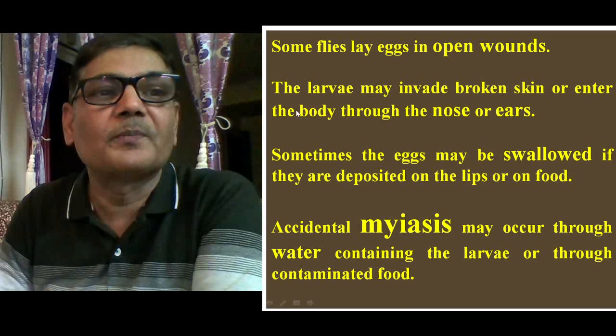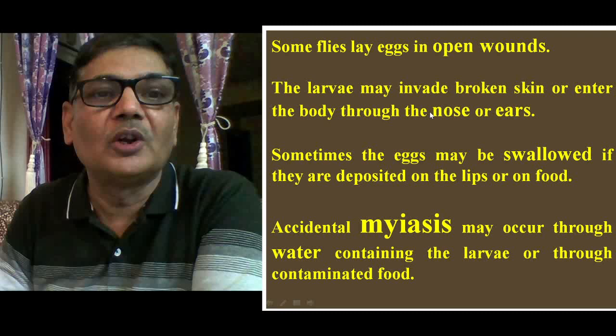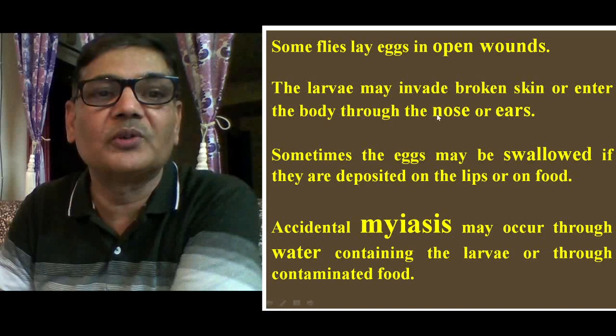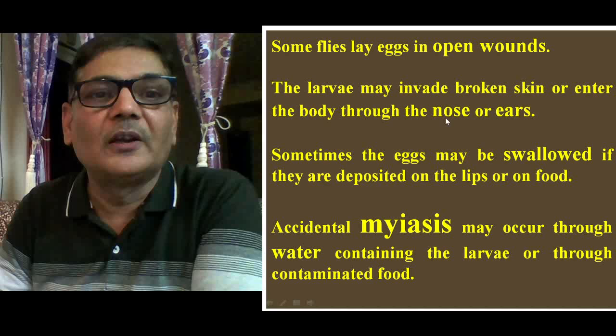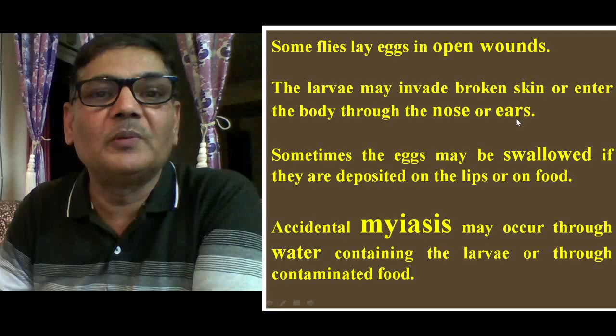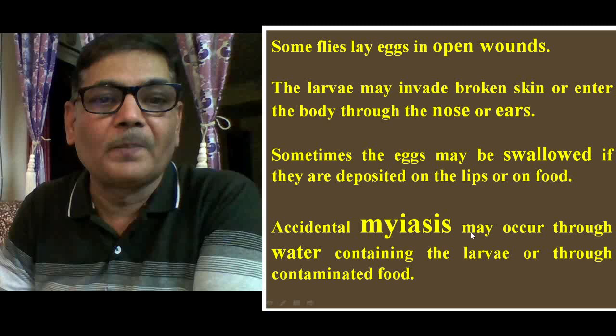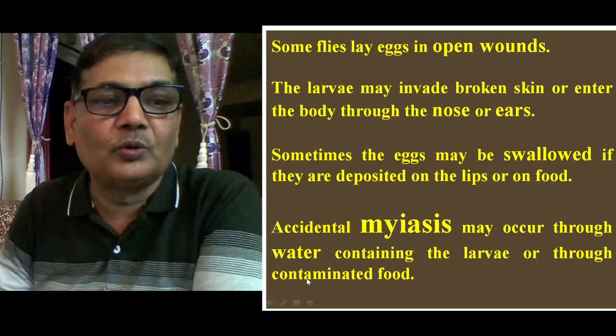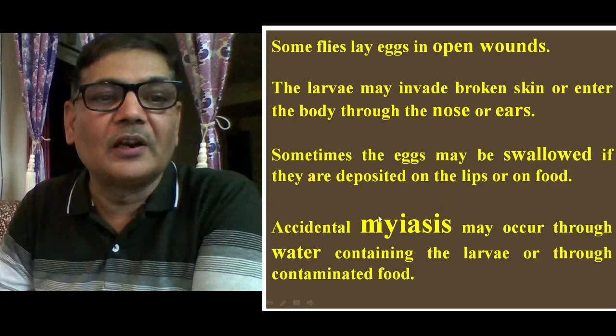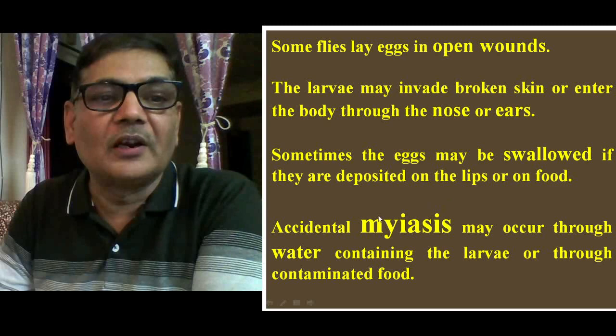Some flies lay eggs in open wounds. The larvae may invade broken skin or enter the body through the nose or ears. Areas like the nose or ears may also have insect infestation since these portions remain open, and if wounds are present inside, flies may lay eggs there. Sometimes eggs may be swallowed if deposited on the lips or on food, and accidental meiosis may also occur through water containing larvae or contaminated food. These are some of the salient points related to meiosis, and hopefully this information is useful in understanding its meaning and seriousness.